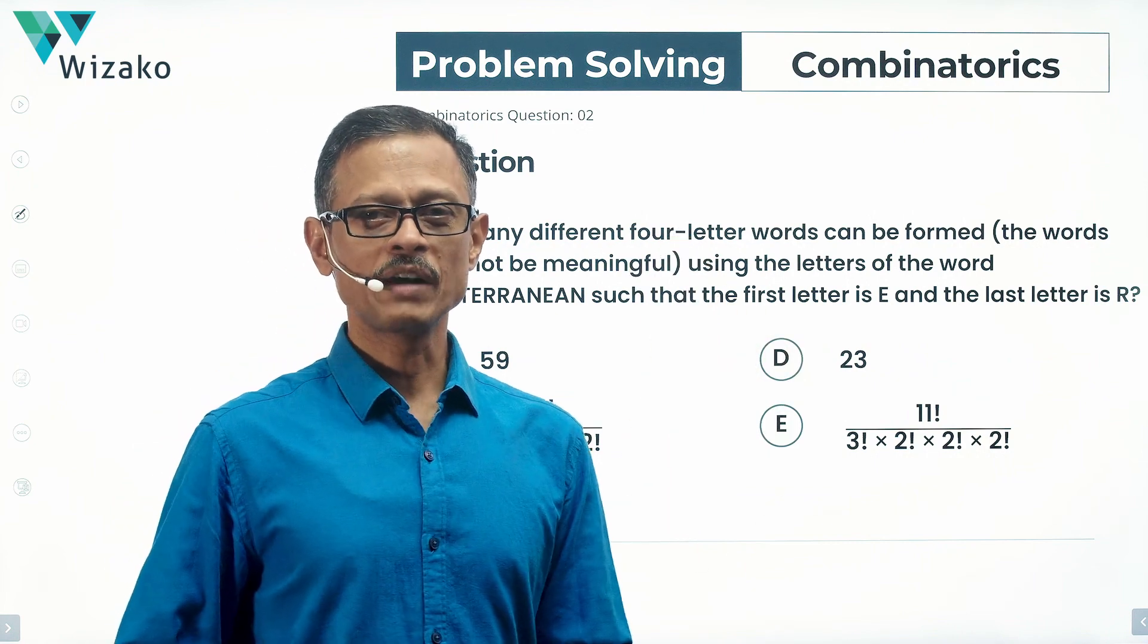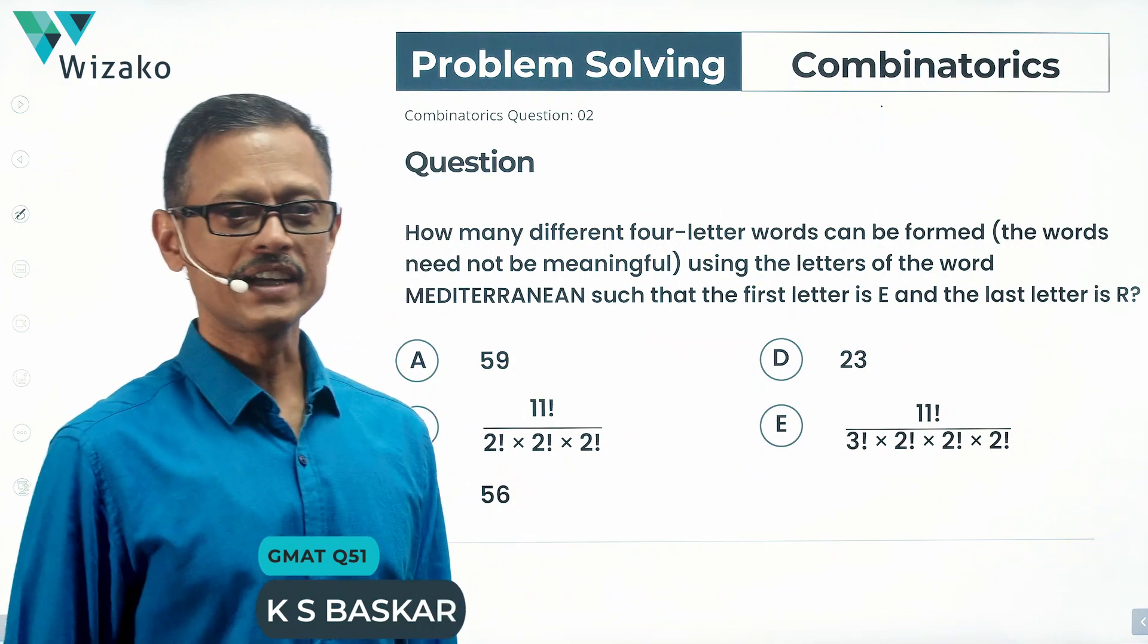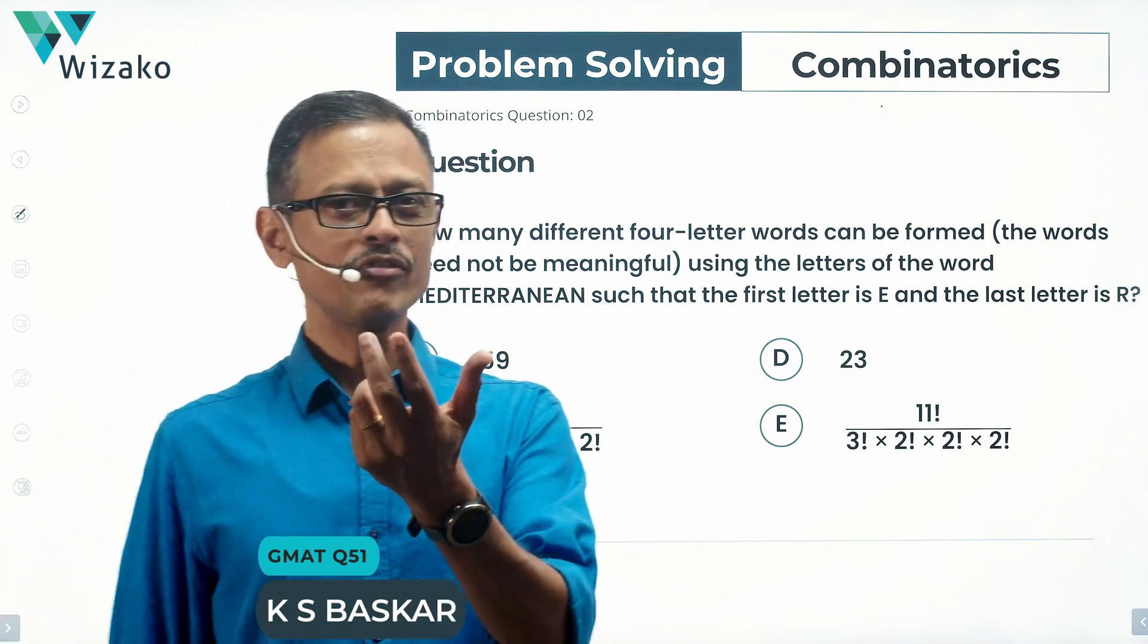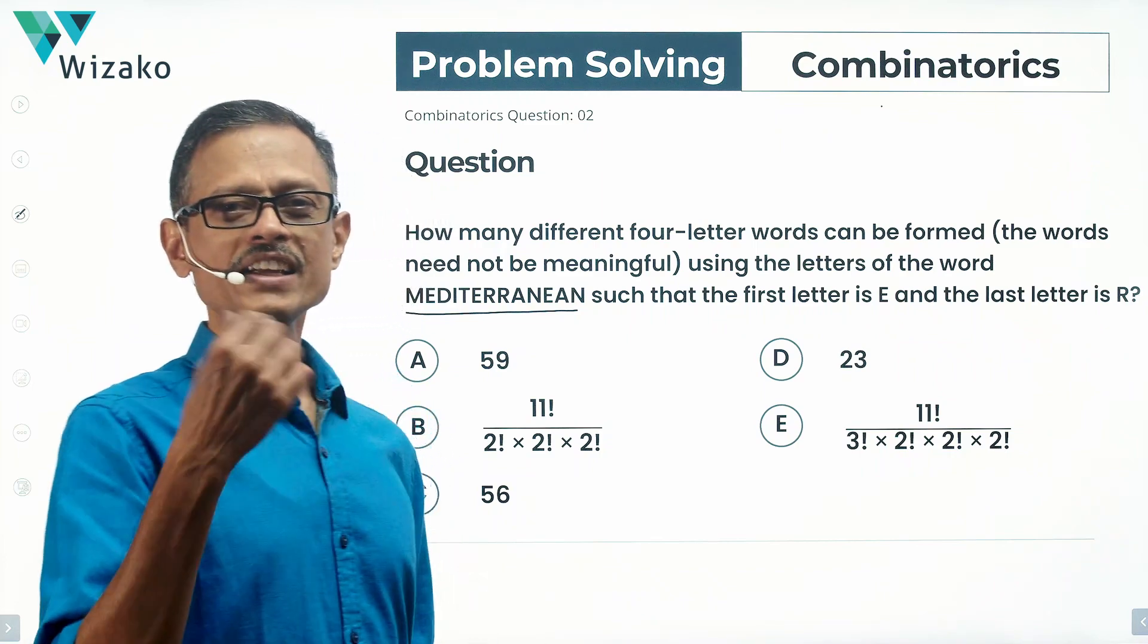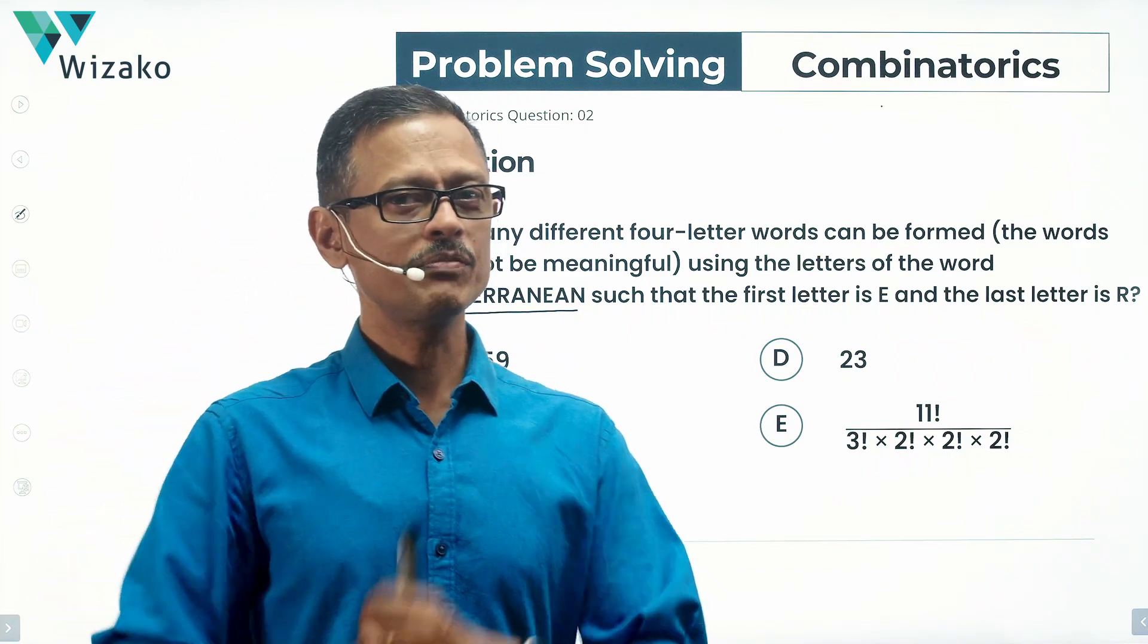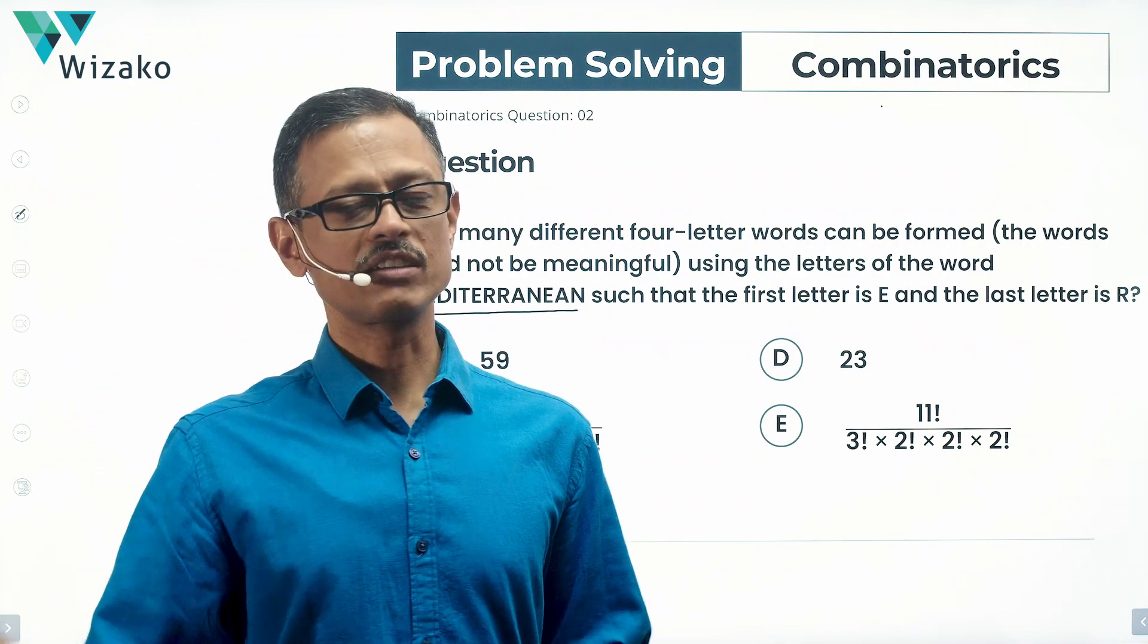Hi everyone. Video solution to a GMAT problem-solving practice question. This question is from Permutation Combination Combinatorics. The concept is selecting a few letters from the word Mediterranean and then reordering them based on a constraint mentioned in the question. A very interesting question - it's not a straightforward rearrangement question.